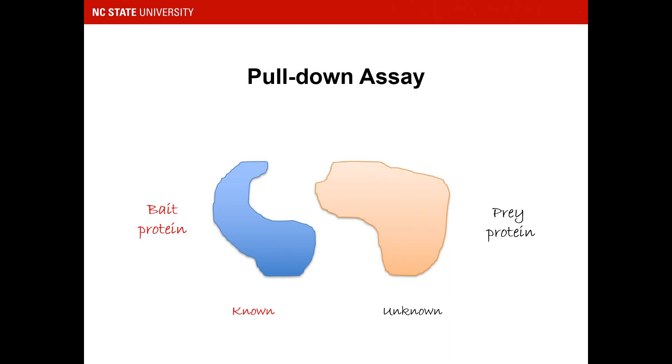In Pull-down assay, we often use a known protein as a bait to detect an unknown protein, the prey.